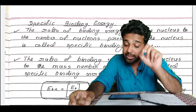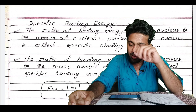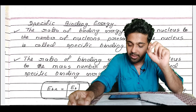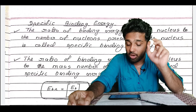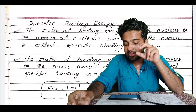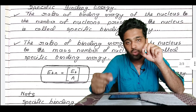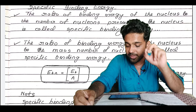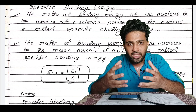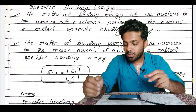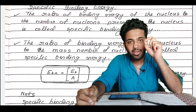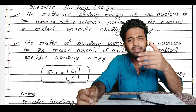The ratio of the binding energy of the nucleus to the mass number of the nucleus is called specific binding energy. Specific binding energy equals Eb divided by A, where Eb is the binding energy and A is the mass number.